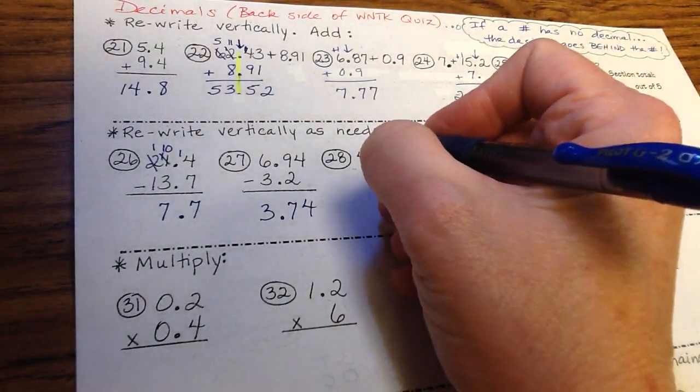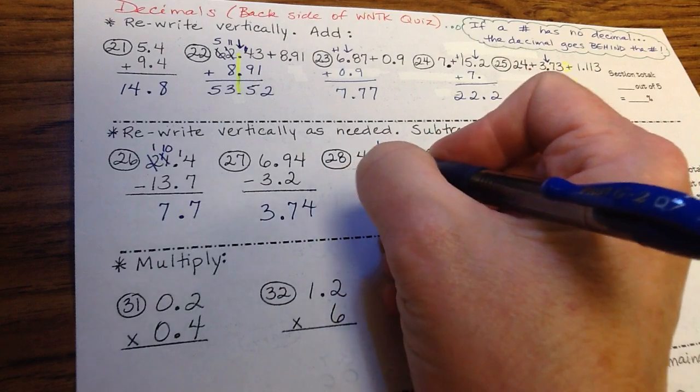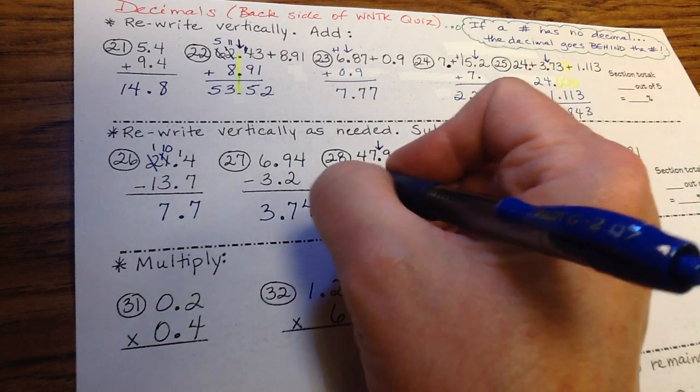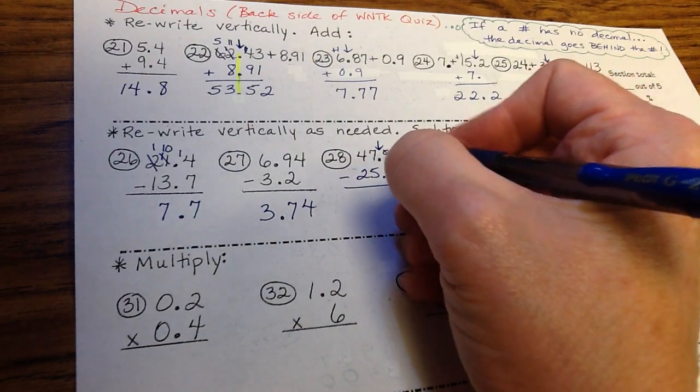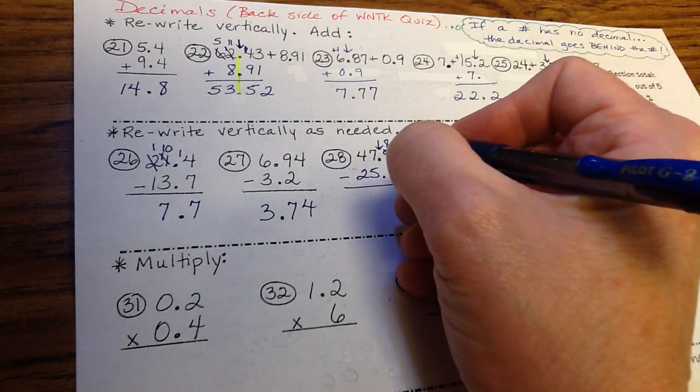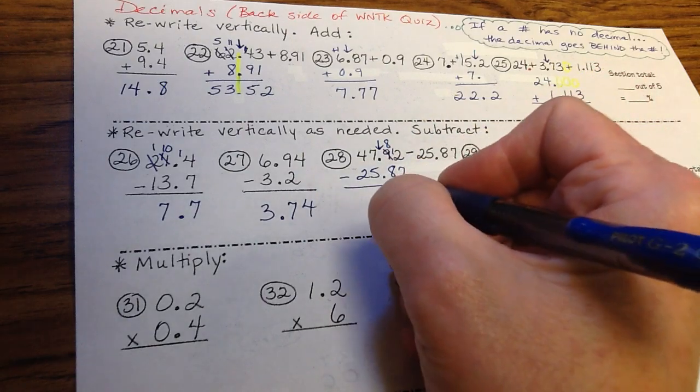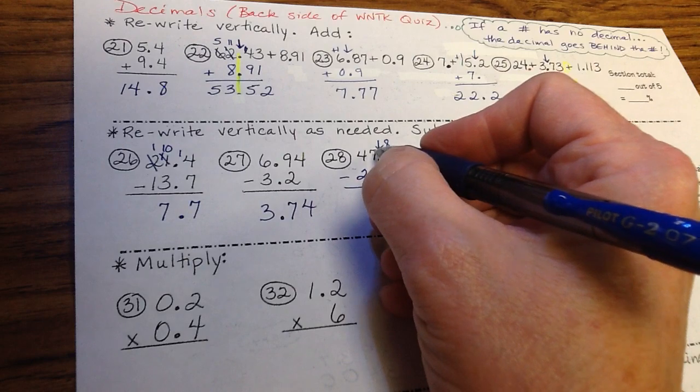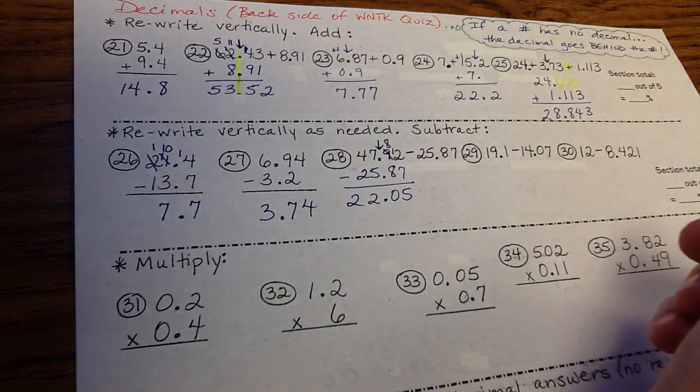Here we've got to line up the decimal first, so we're going to put it rewritten. These have the same exact digits, so it hopefully wouldn't trick anybody. Subtracting. 2 doesn't have enough, so it's going to borrow from the 9. Cross out, 1 less 1. 12 minus 7 is 5. 8 minus 8 is 0. Bring your decimal straight down. 7 minus 5 is 2. 4 minus 2 is 2. 22.05.